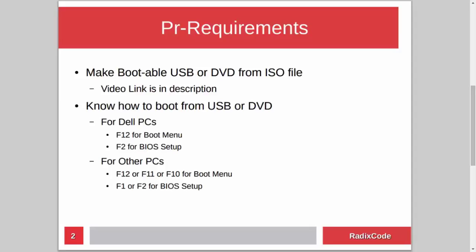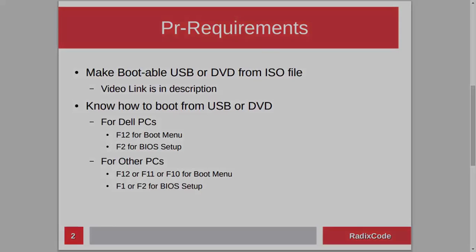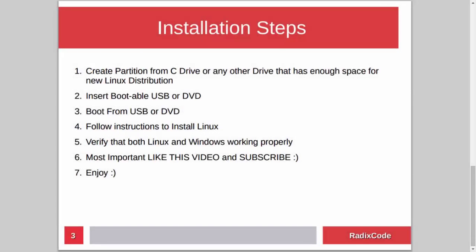After making a bootable USB, you should know how to boot your computer from a USB stick. For Dell laptops, press F12 to go to the boot menu and select the USB drive. You can also go to BIOS setup by pressing F2 and in the boot section change the boot order to boot from USB. On other computers, press Escape, F12, F11, or maybe F8. For BIOS setup you can press either F1 or F2.